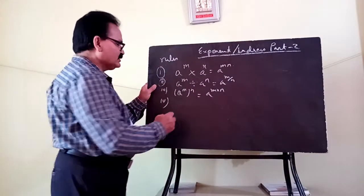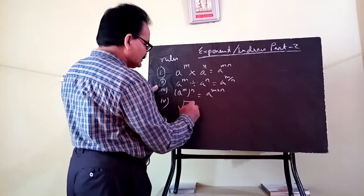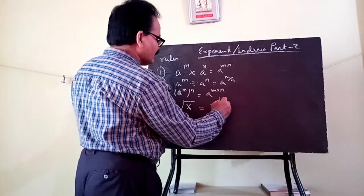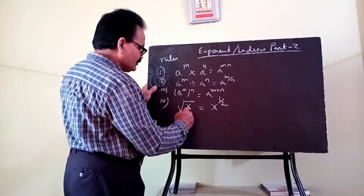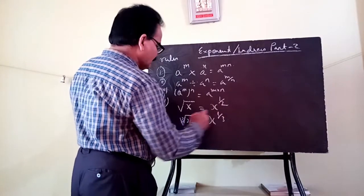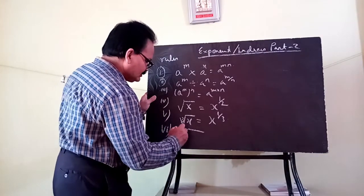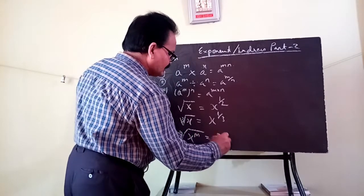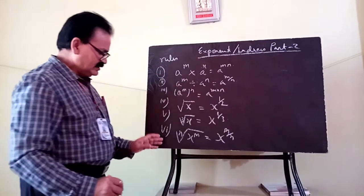The fourth law: if the square root of x is there, that can be written in power form as x to the power 1 by 2 — that is the fractional power. Similarly, if the cube root of x is there, it can be written as x to the power 1 by 3. And if there is the nth root of x to the power m, we can write it in exponential form as x to the power m by n.